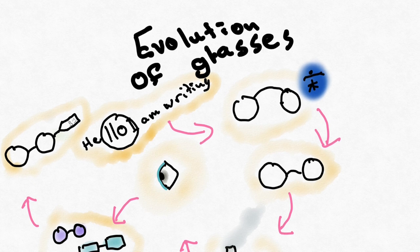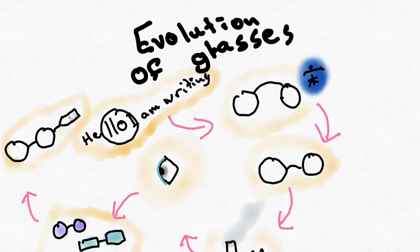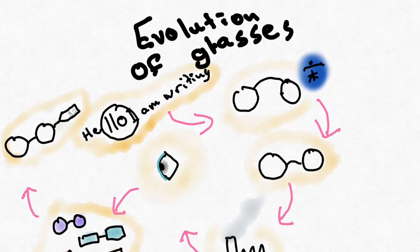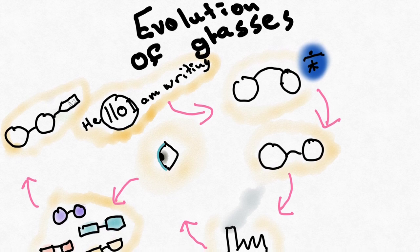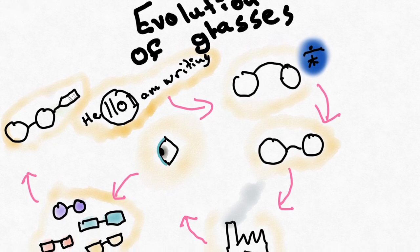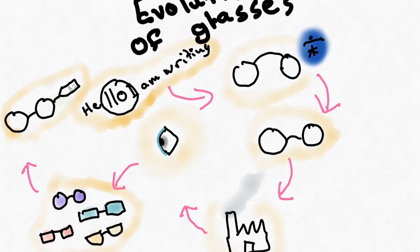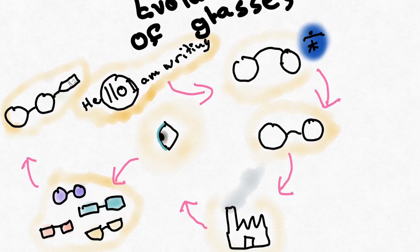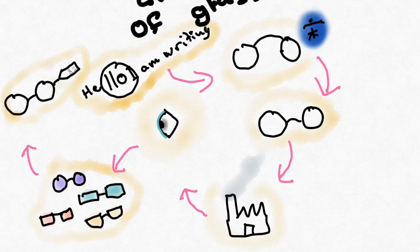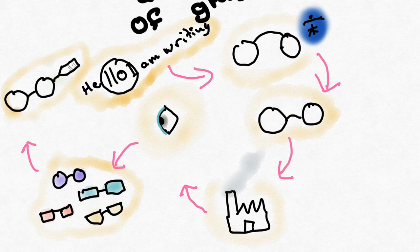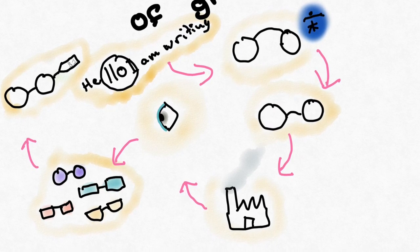The history of glasses is a fascinating journey through time, from the earliest origins of simple magnifying lenses to modern-day frames with advanced technology. Glasses have played an important role in helping people with vision impairments see more clearly, and their evolution over the centuries has been driven by advances in technology, manufacturing, and design. Today, glasses are a practical necessity and a fashion accessory with a wide range of styles and designs available to suit every taste and budget. Thus concludes our quick look at the history of glasses.